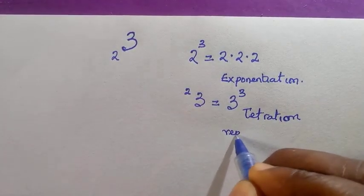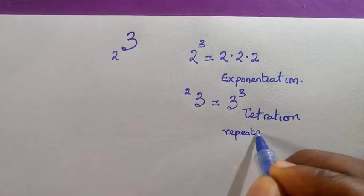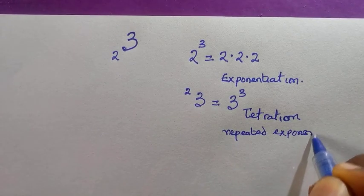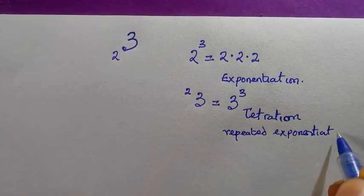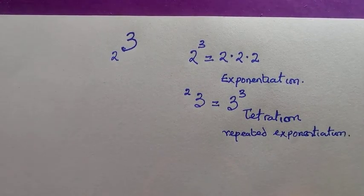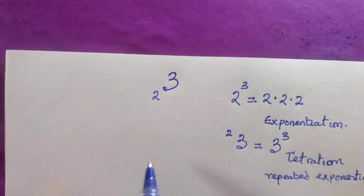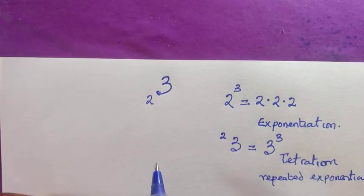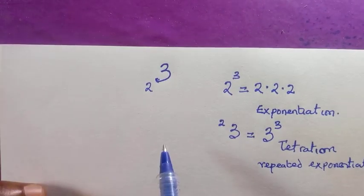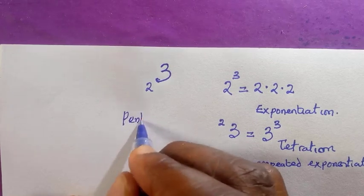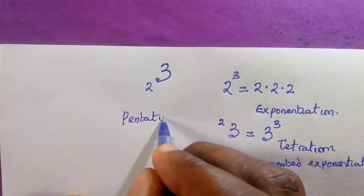What of when we have 3? We cannot call this power. Should I call it base? Let's say the left base, and it is called pentation. Pentation in the sense that it's repeated tetration.